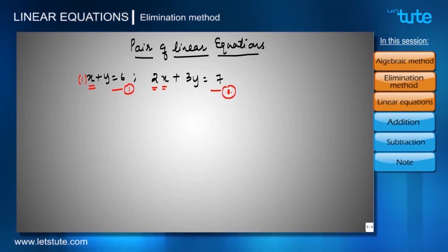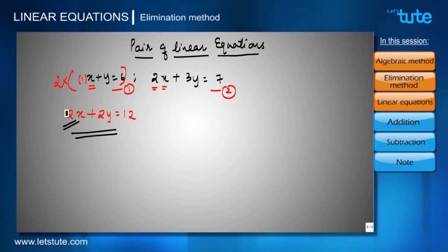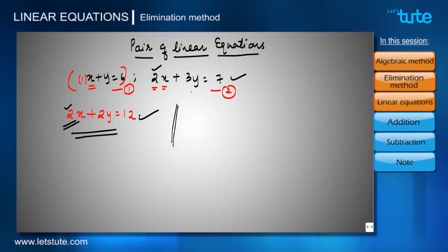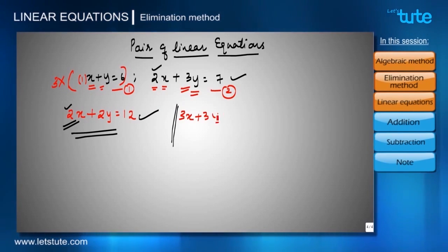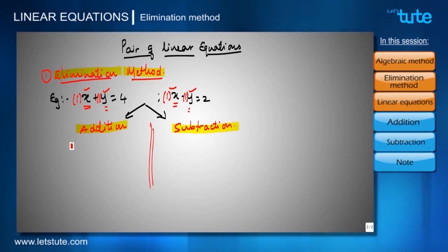Let's say equation one is taken and we want constant 2 with the term x in equation one. We multiply equation one by 2, so we get 2x plus 2y equals 12. Now the constant with x is 2, matching the other equation, and we can eliminate x. Similarly, if I want to eliminate y and need constant 3, I multiply equation one by 3 to get 3x plus 3y equals 18, matching the constant 3 with y in the other equation.